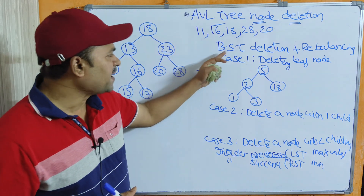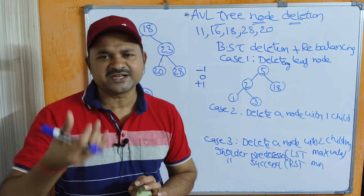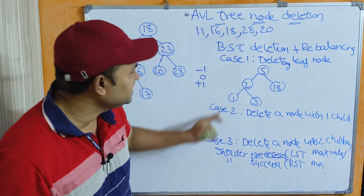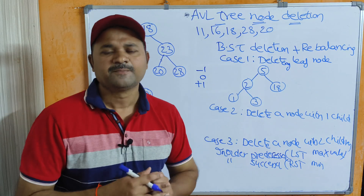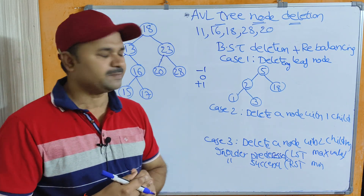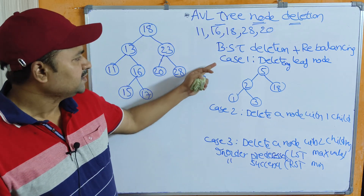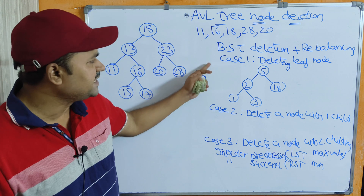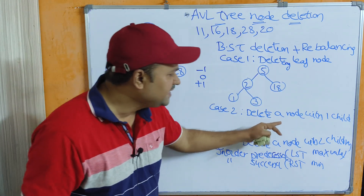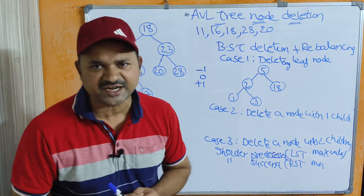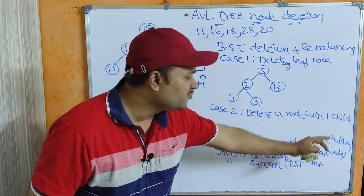In binary search tree deletion we have 3 cases. Let us first understand about binary search tree deletion, because AVL tree deletion is similar to binary search tree deletion. Case 1 is deleting the leaf node. Case 2 is deleting a node with 1 child. Case 3 is deleting a node with 2 children.